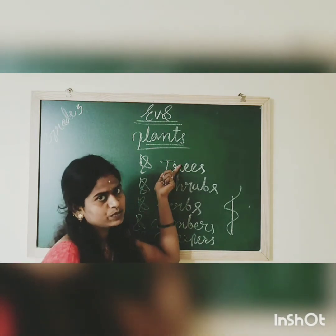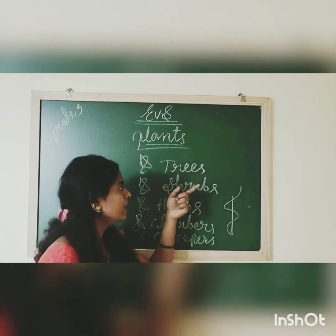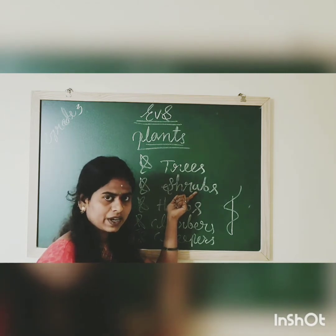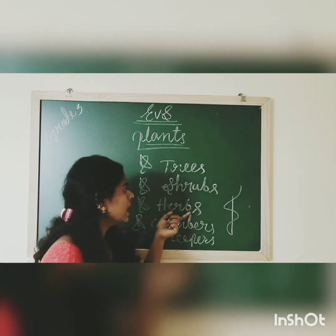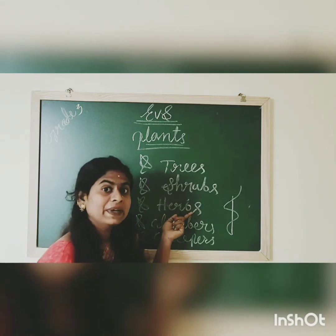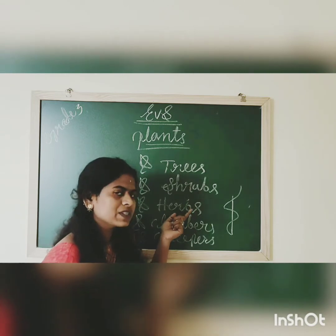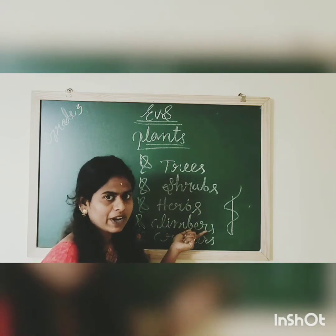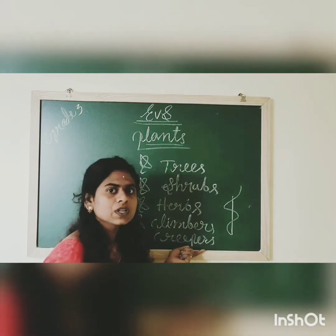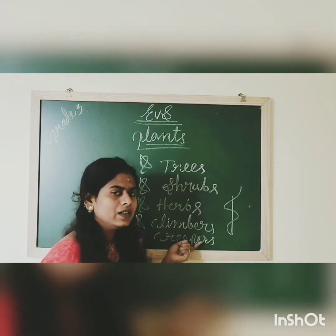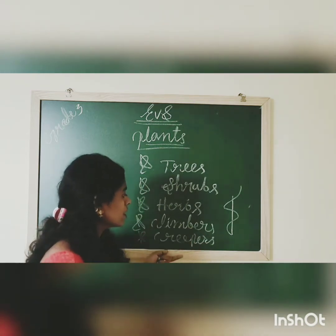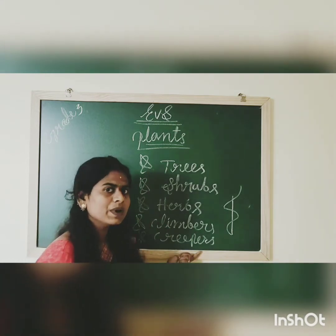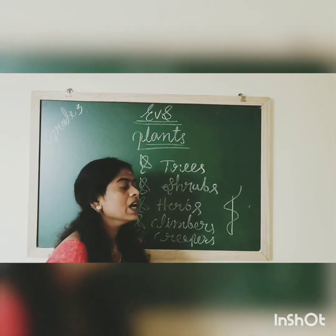Examples for trees are neem tree, banyan tree, and mango tree. Shrubs include hibiscus plants and bamboo. Herbs — mint is the best example. Climbers include grapevine and money plant. Creepers include watermelon and pumpkin. So like this, we discussed about many kinds of plants in our last session.